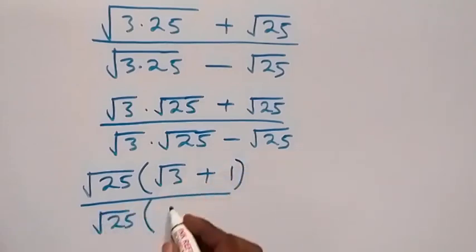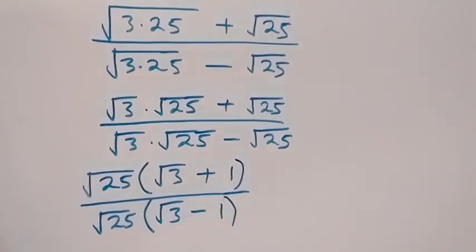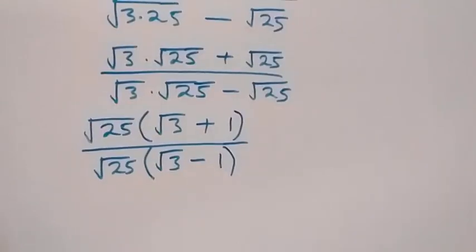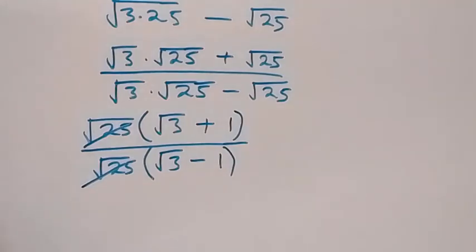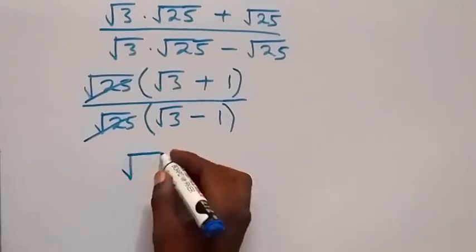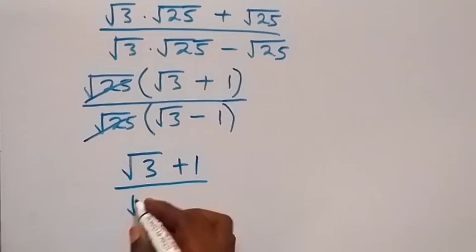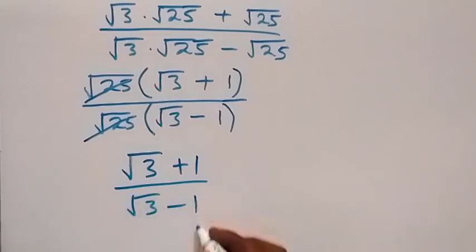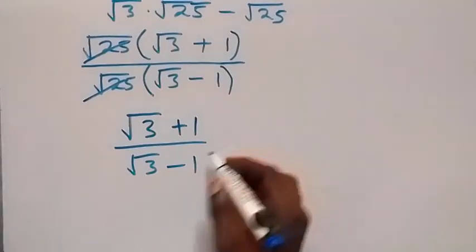We can factor it out and have root 3 left as well, then minus 1 will be left. From here, root 25 cancels each other, and we are left with root 3 plus 1 over root 3 minus 1. Now we can rationalize this and multiply with the conjugate of the denominator.